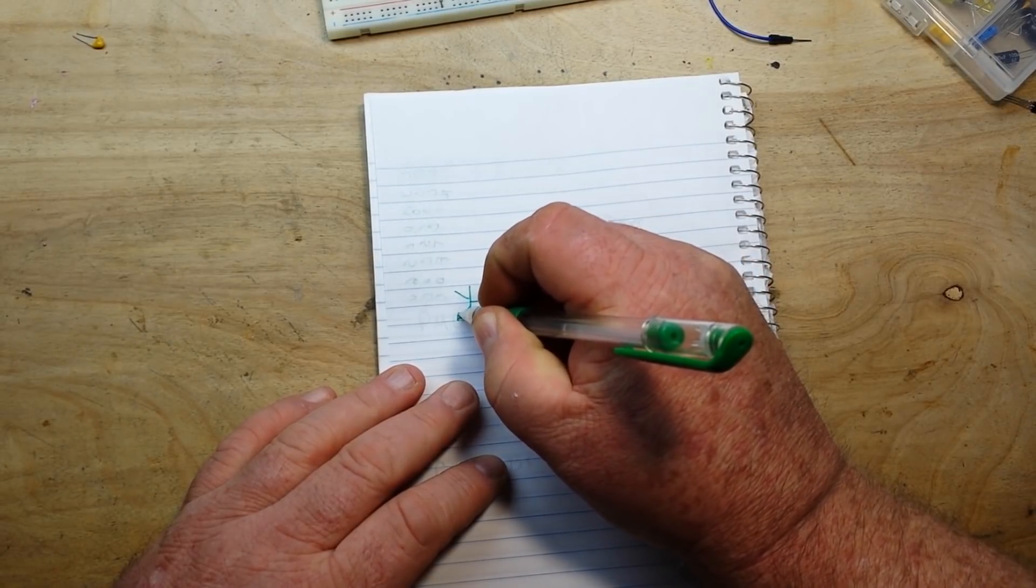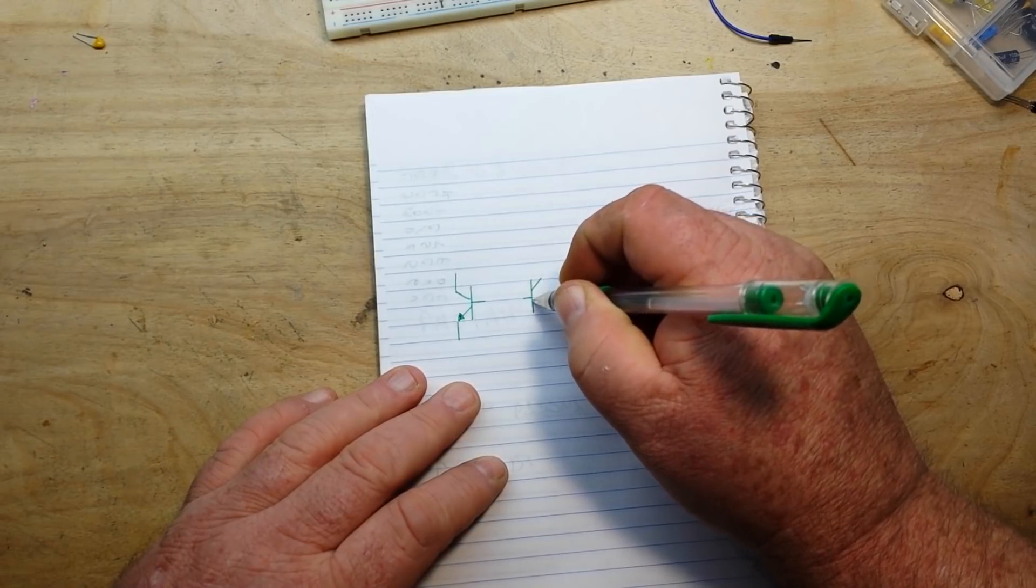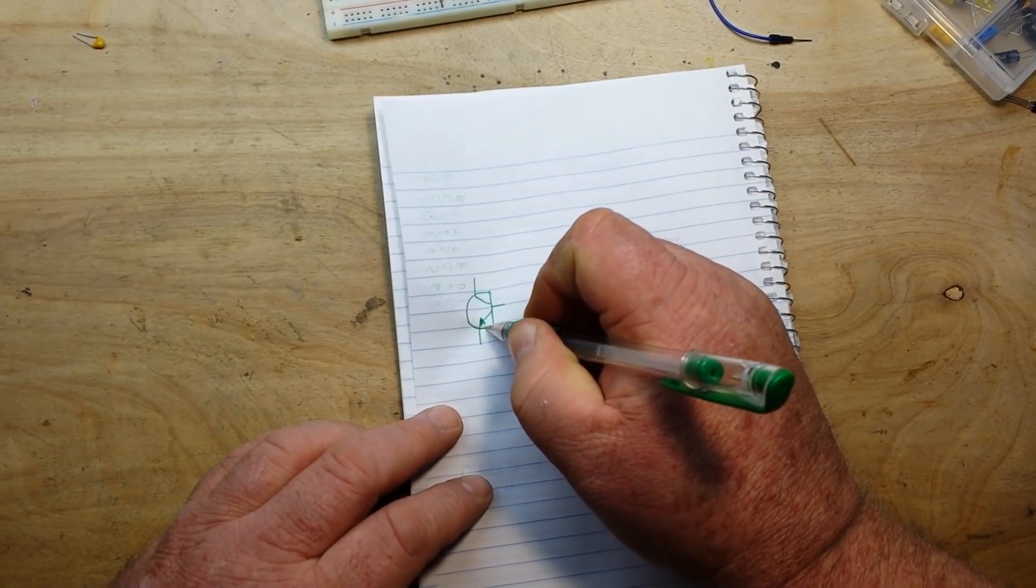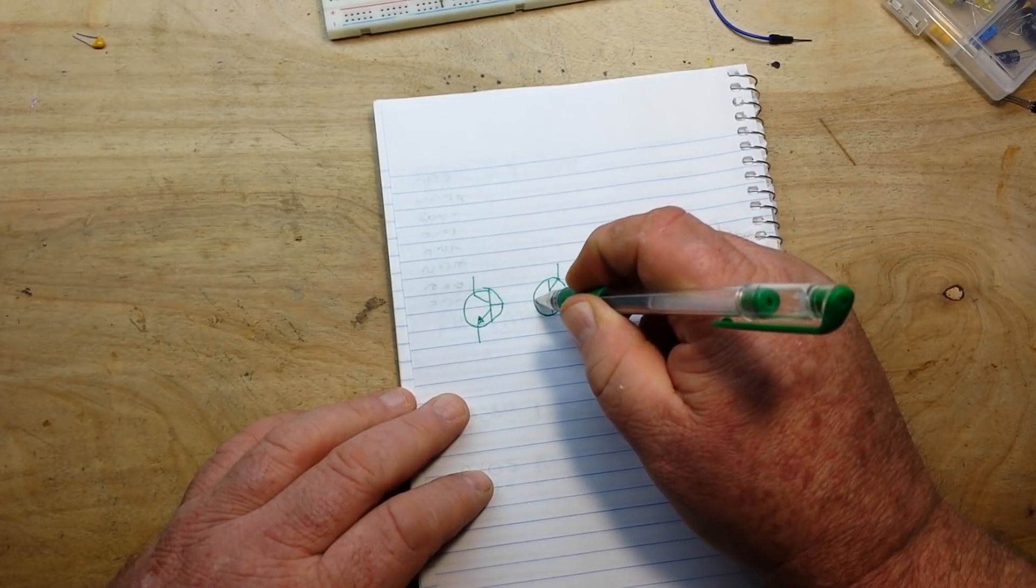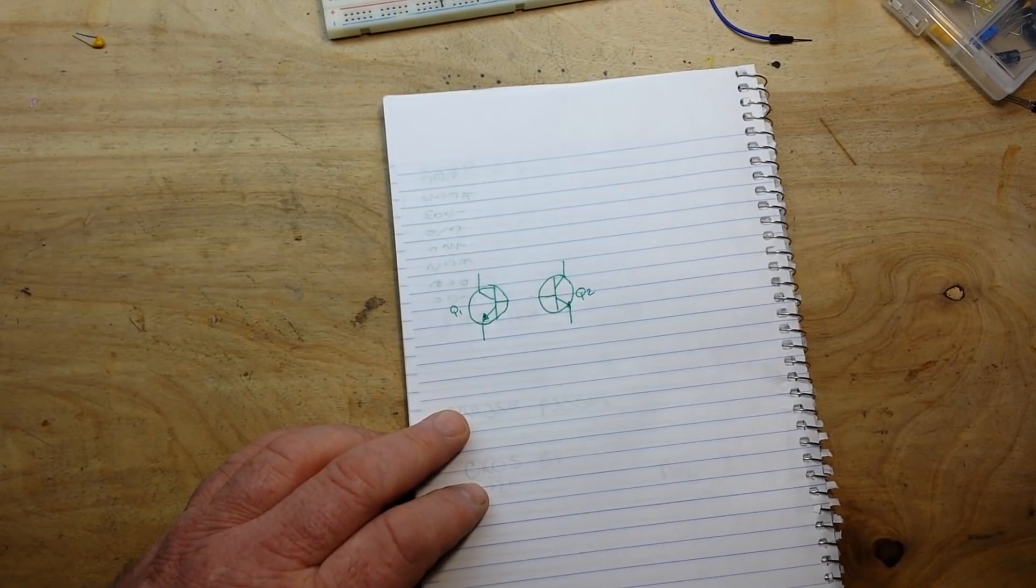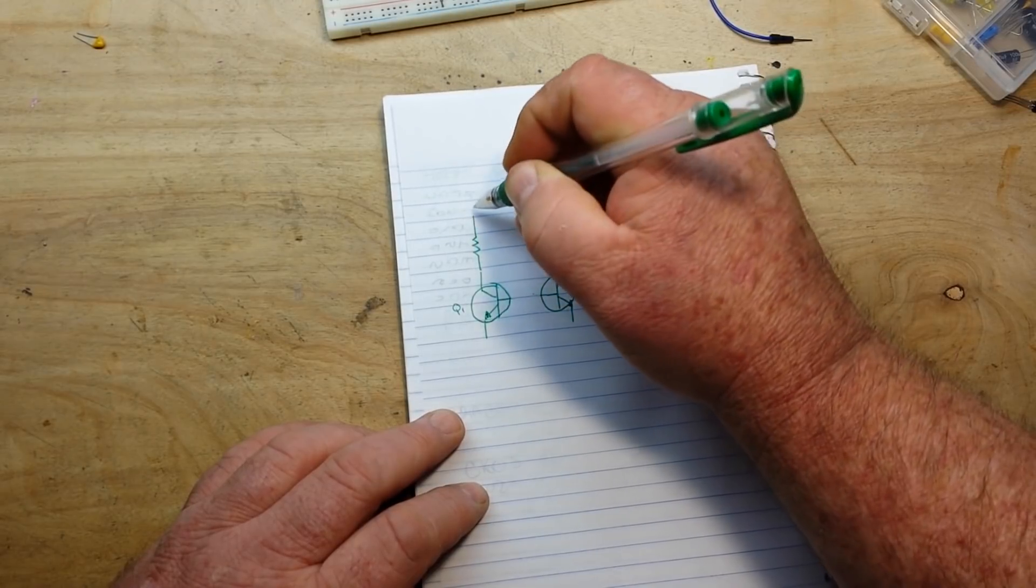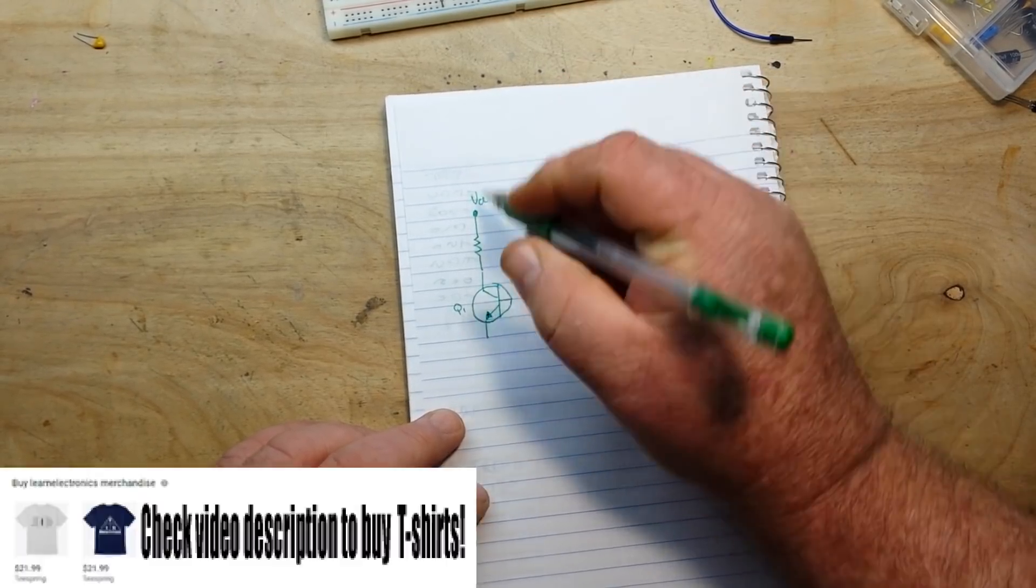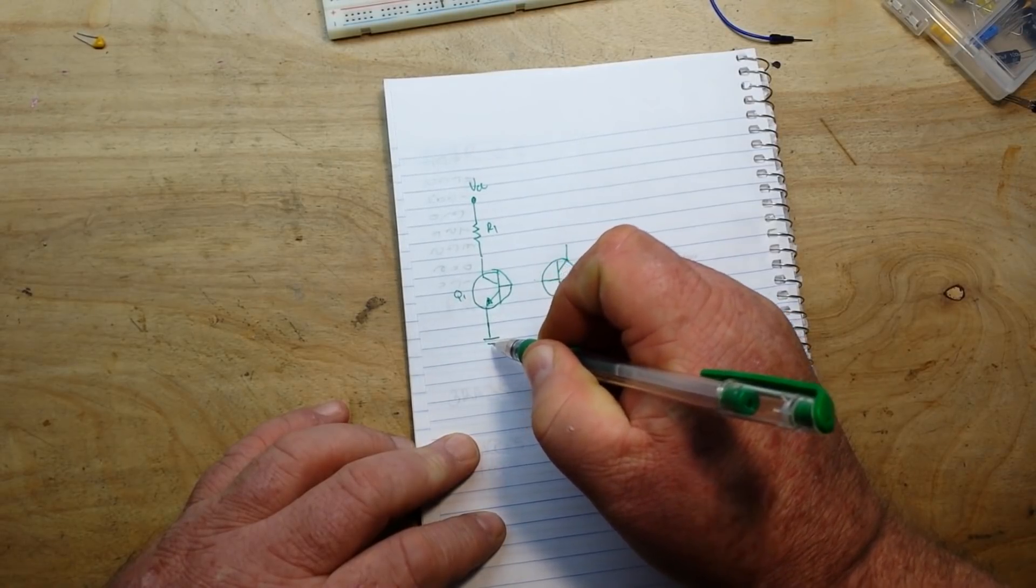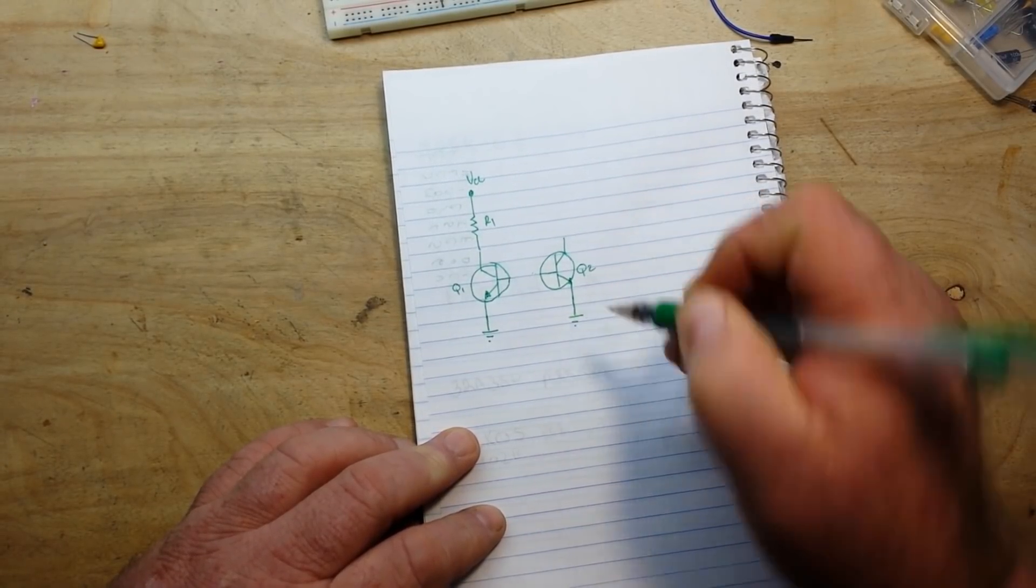So we start off here, this is Q1 and this is Q2. I'm using 2N2222 transistors, your basic NPN transistors, nothing special there. Our first transistor is biased on the collector.